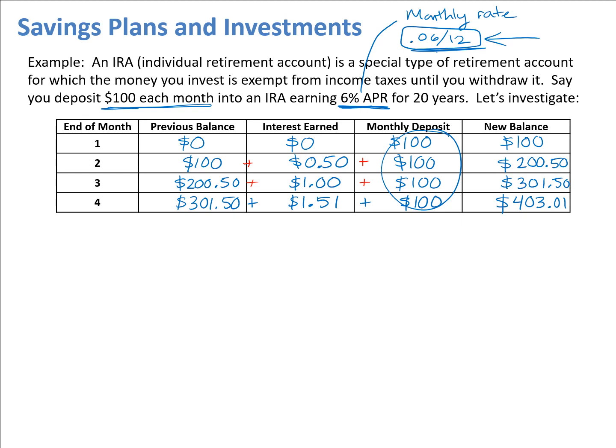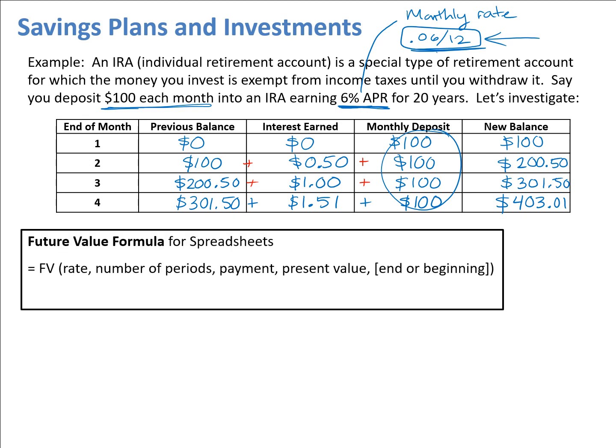That doesn't seem like a lot, but we've only gone four months out. What we want to do is look at this for 20 years. Instead of extending the table, we're going to use the spreadsheet's Future Value formula. We want to know the future value of the account after 20 years. This FV formula works in almost all spreadsheets — Google Sheets or Excel. All formulas start with an equal sign, then FV. It's the same formula we used for compound interest, but now we have monthly deposits.